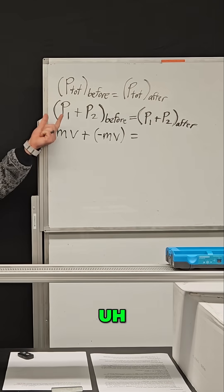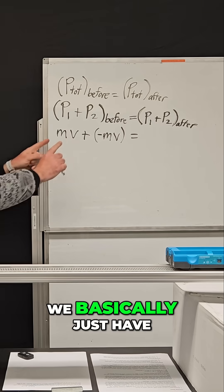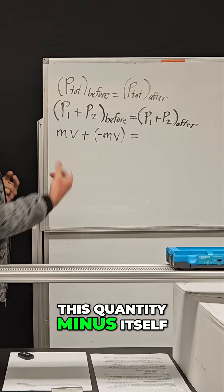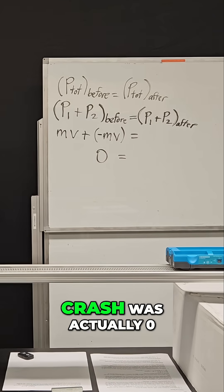So remember we have to add the yellow car's momentum plus the blue car's momentum before the crash. So we basically just have this quantity minus itself. And so overall, the momentum before this crash was actually zero.